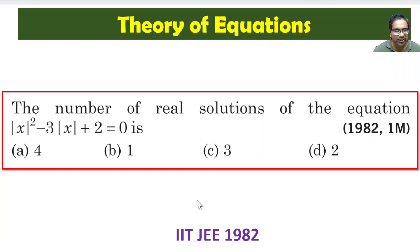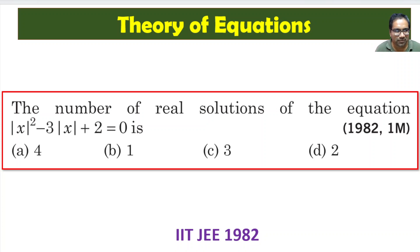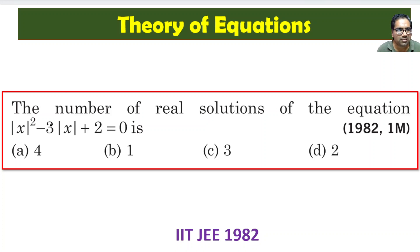Hi friends, here is an elementary problem based on absolute functions. We have this quadratic equation: absolute value of x, whole square, minus 3 times absolute value of x, plus 2 equals 0. How many solutions does this have?